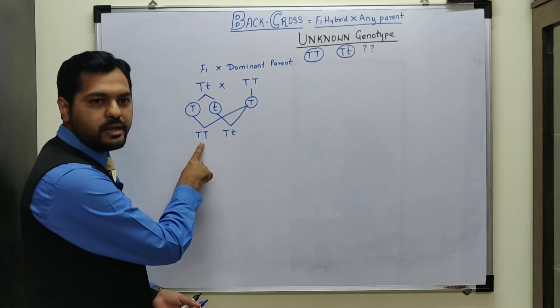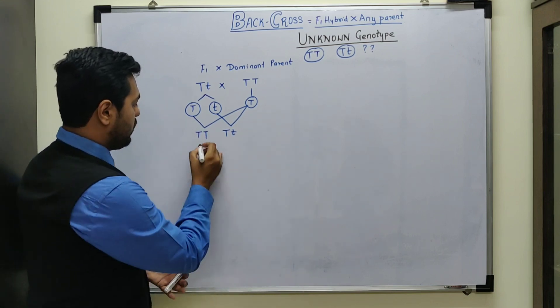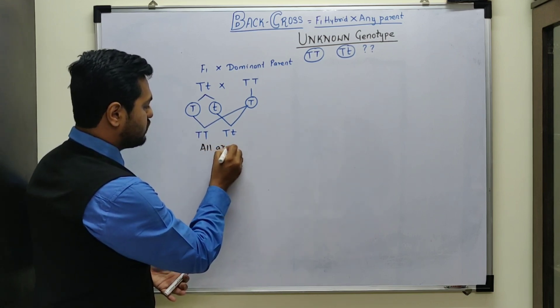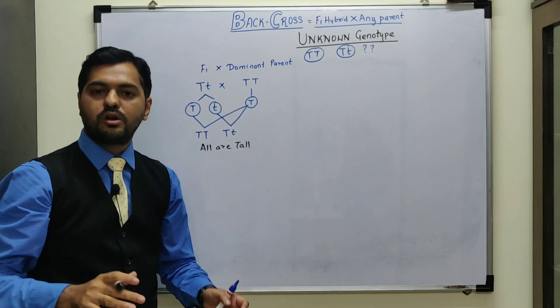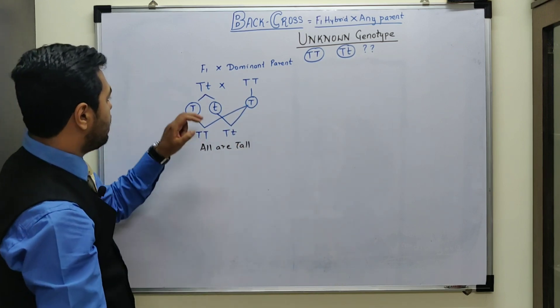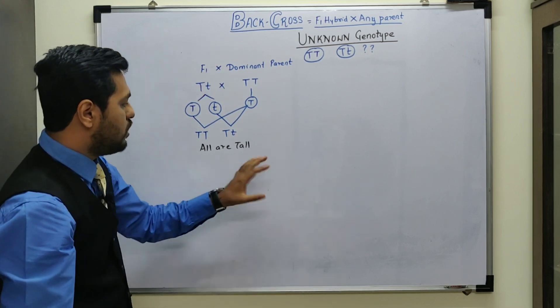So here this offspring is tall. This offspring is also tall. So phenotypically, all the offsprings are tall only. From this experiment, we don't get any conclusion. The reason for that is, we cross tall with tall, all the offsprings are tall.